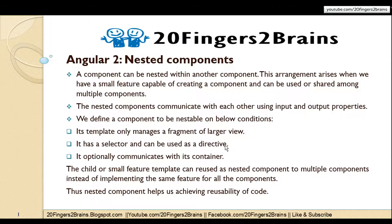A component can be nested within another component. This arrangement arises when we have a small feature capable of creating a component that can be used or shared among multiple components. The nested components communicate with each other using input and output properties. We define a component to be nestable based on certain conditions.